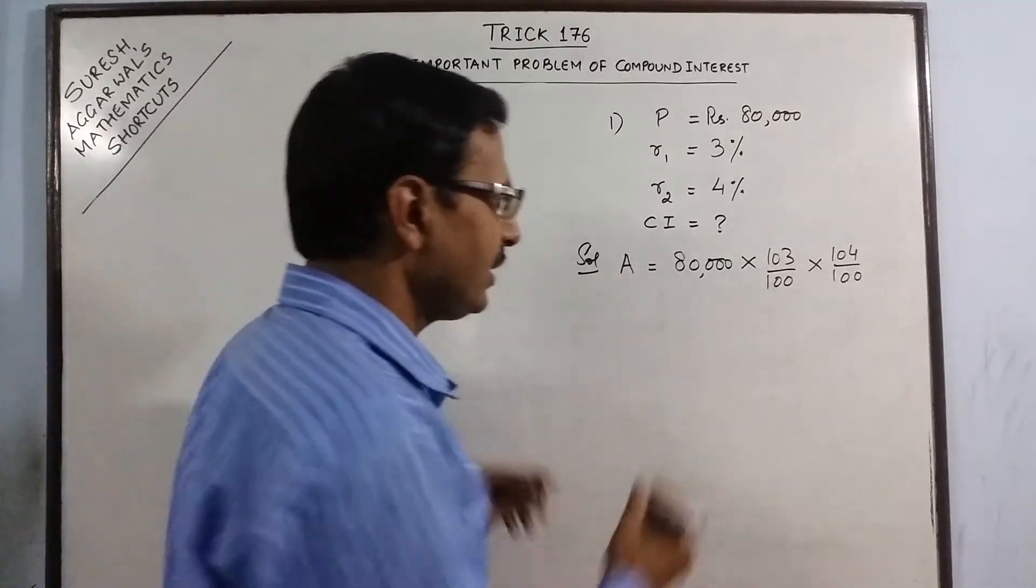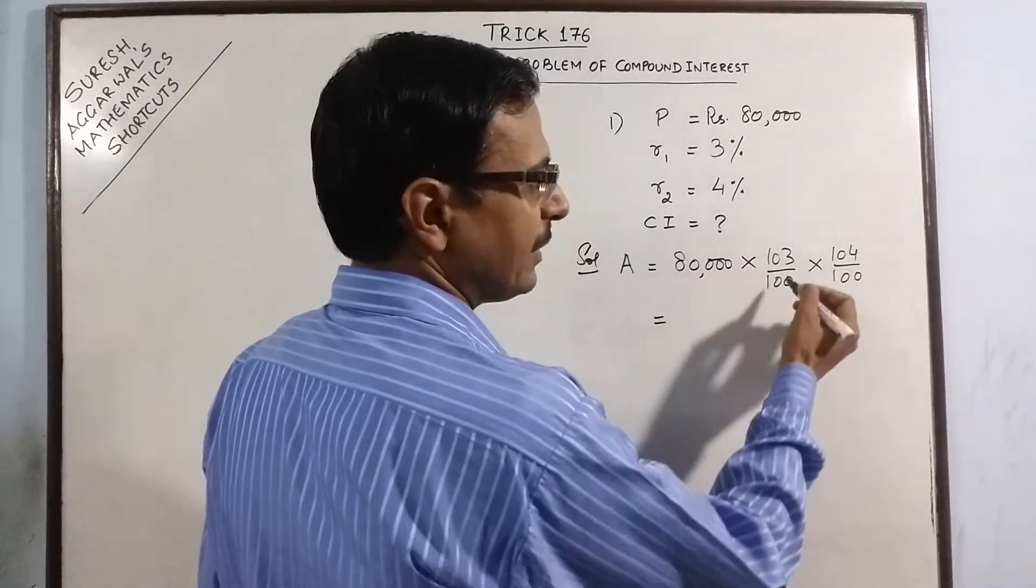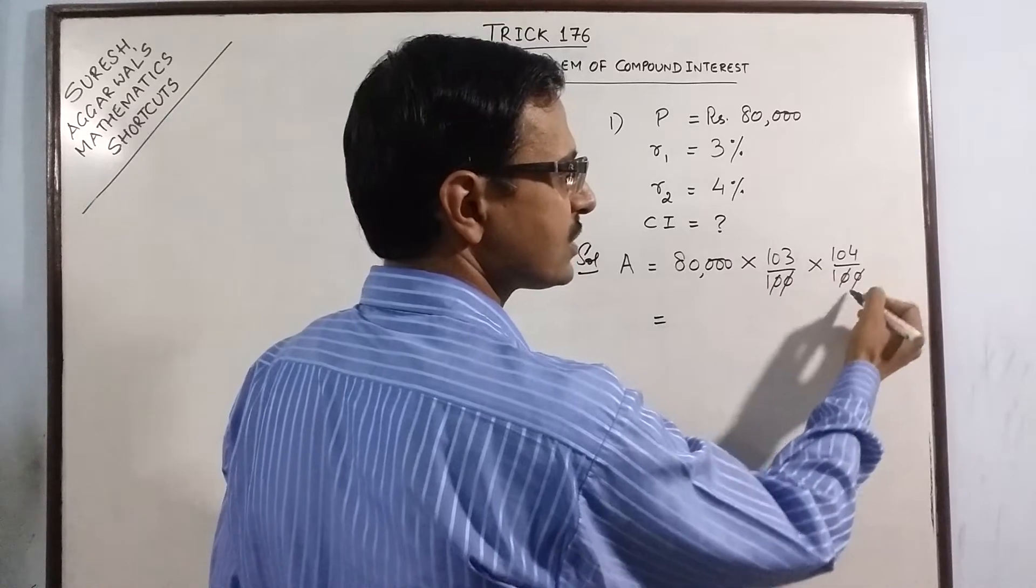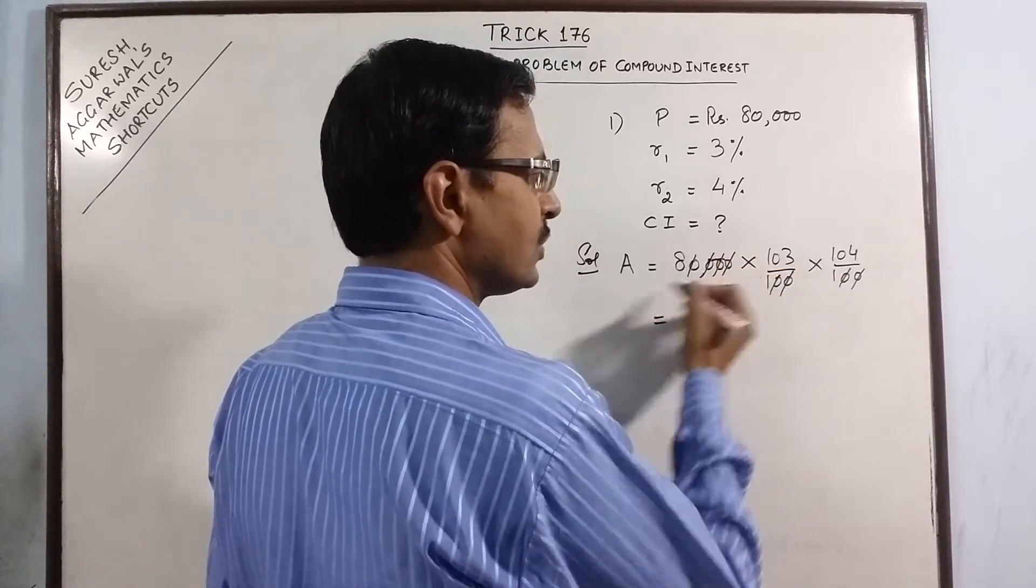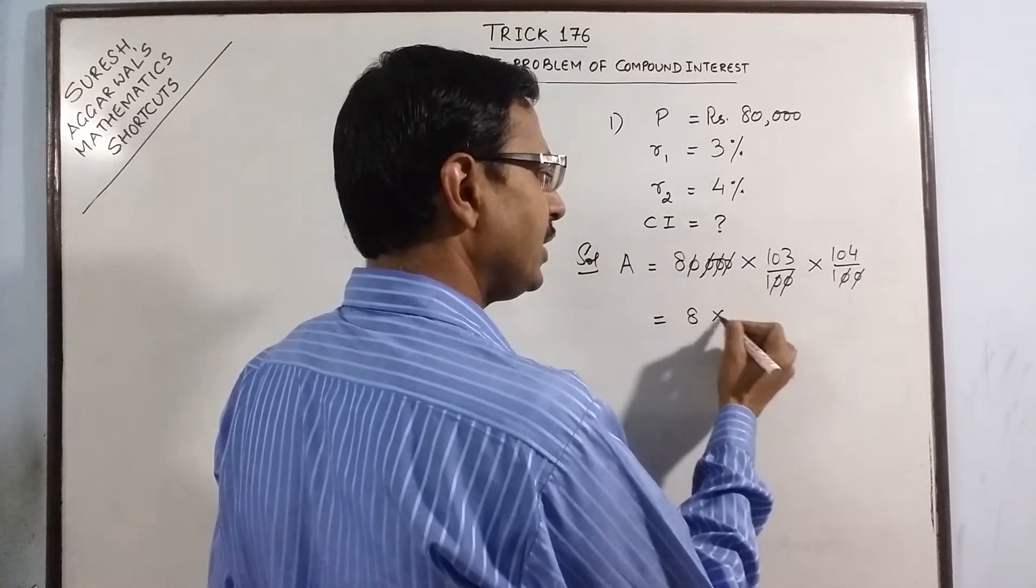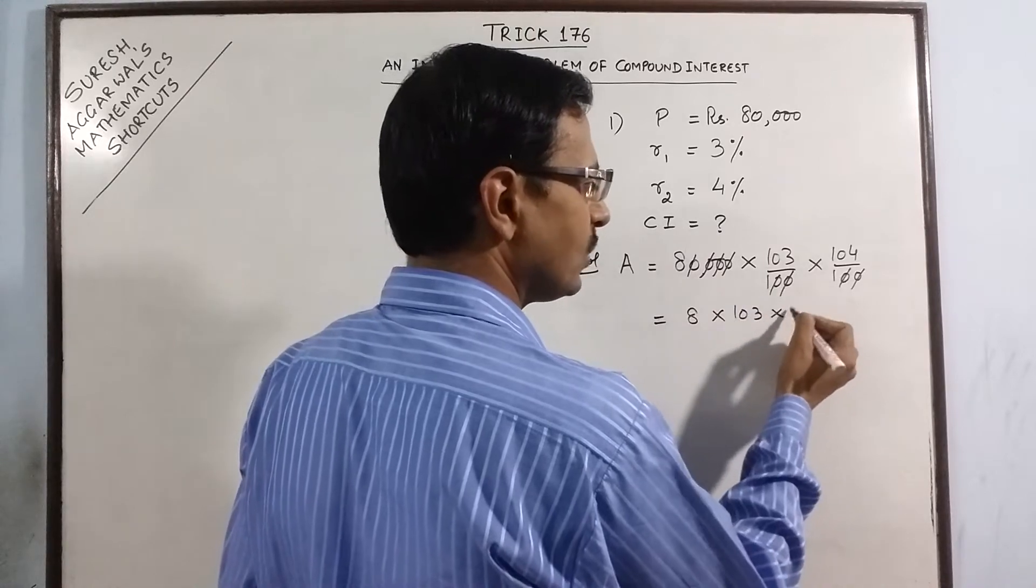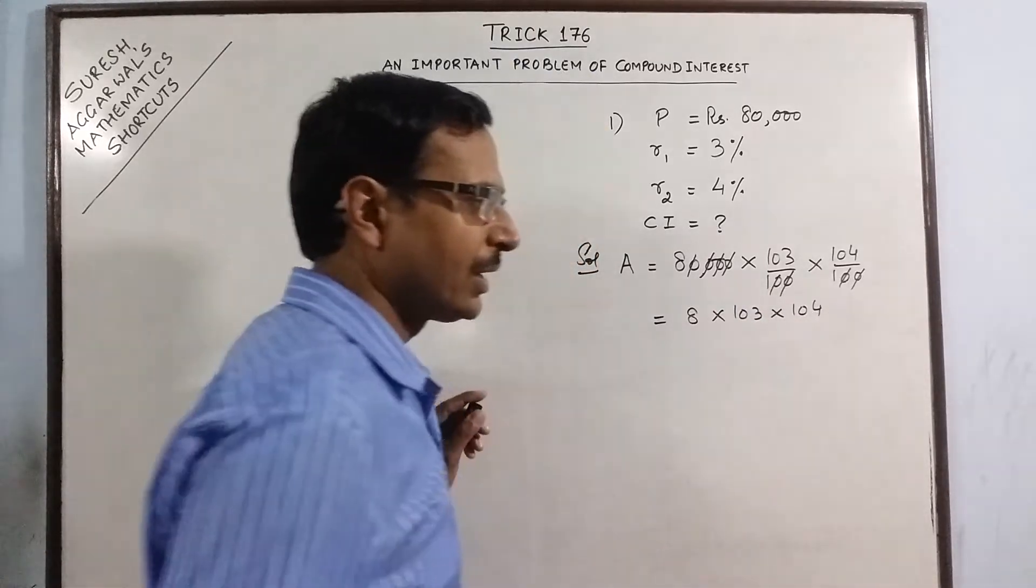Now again here you can use Vedic mathematics tricks. Say we have four zeros already cancel out. So we need to just calculate 8 into 103 into 104.